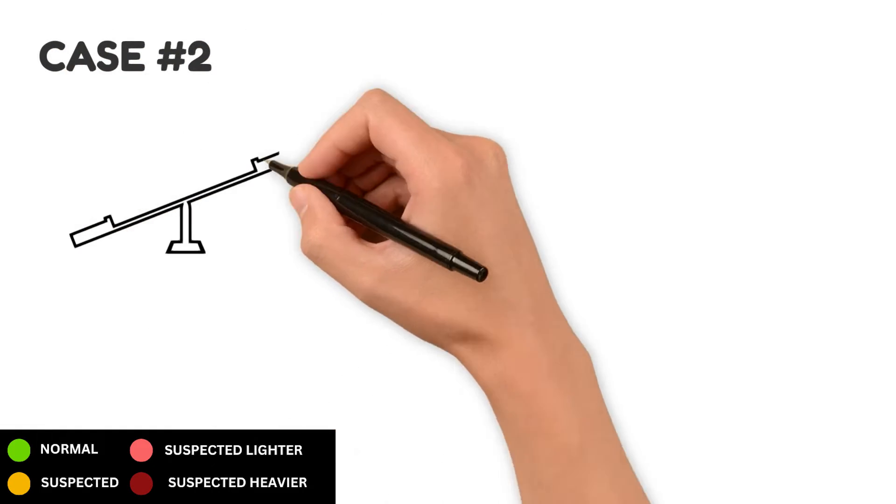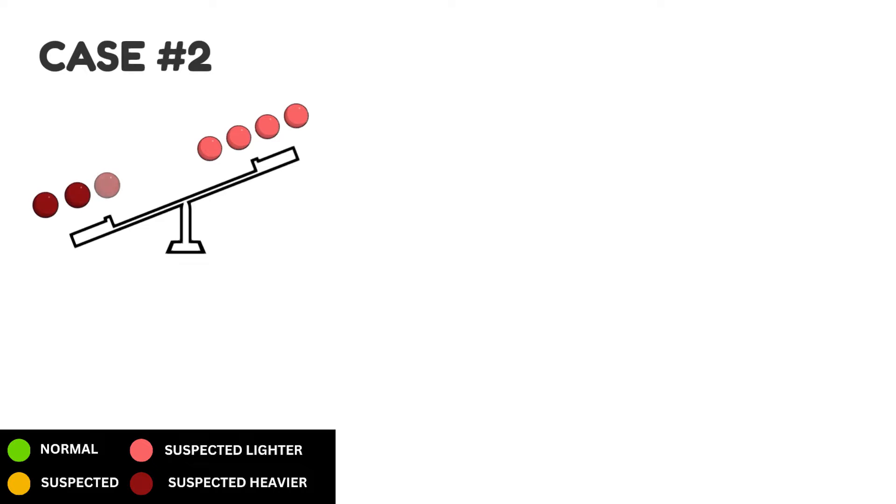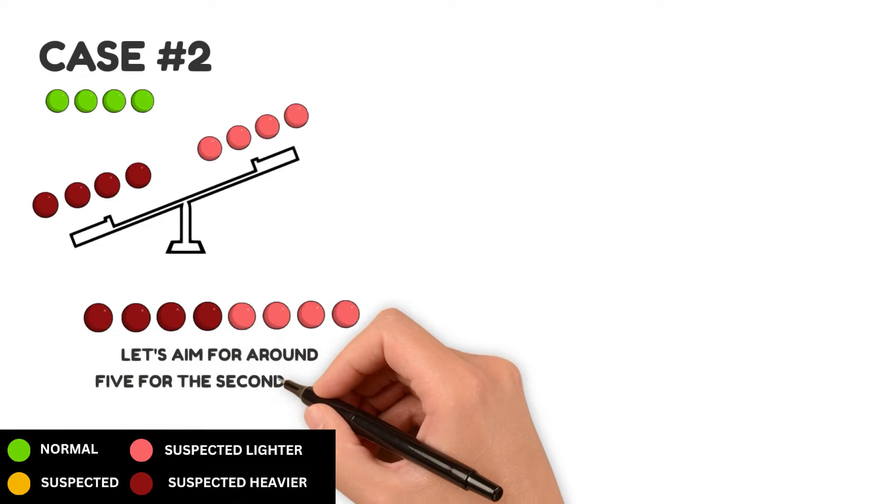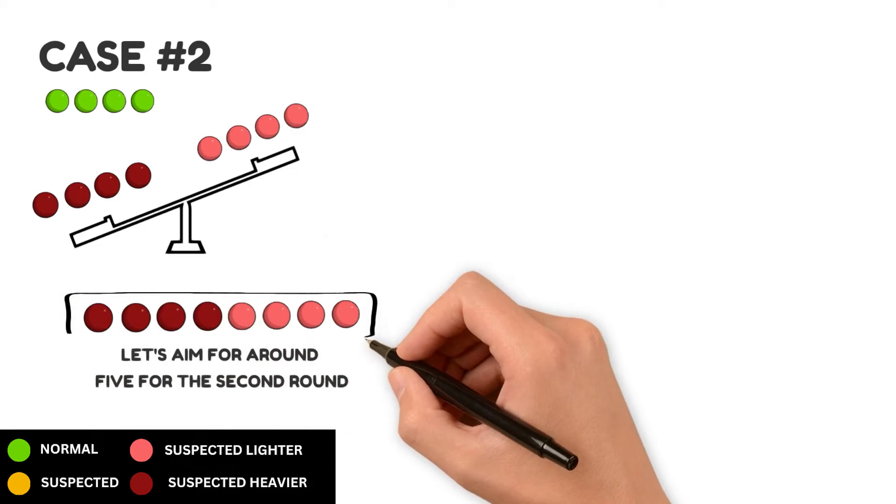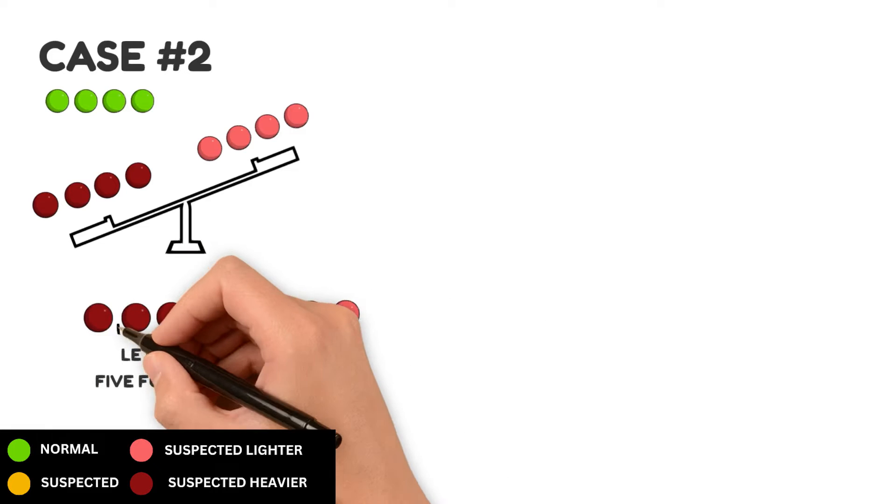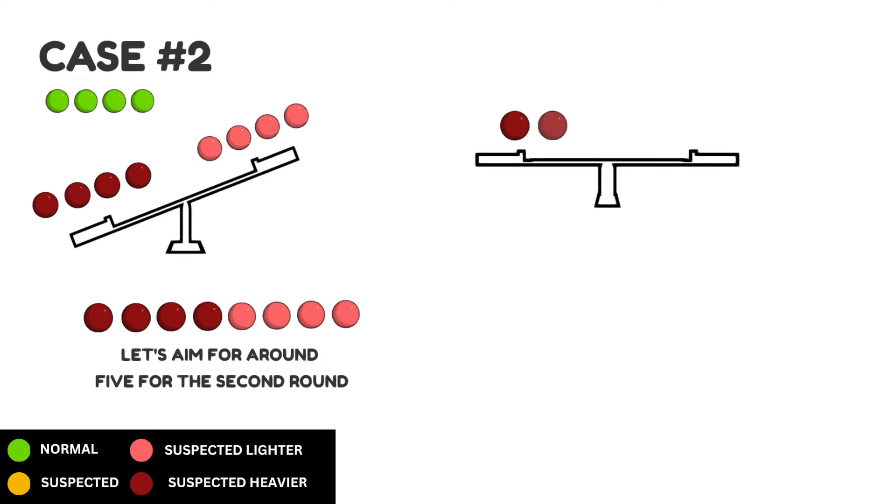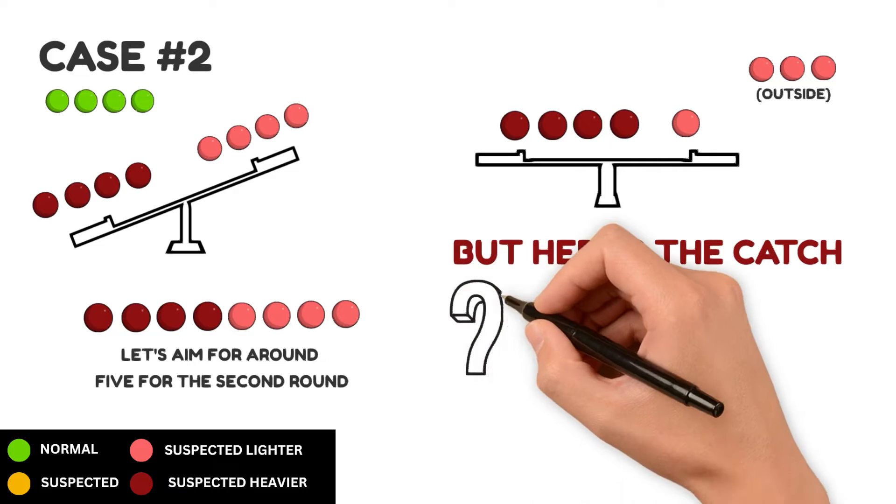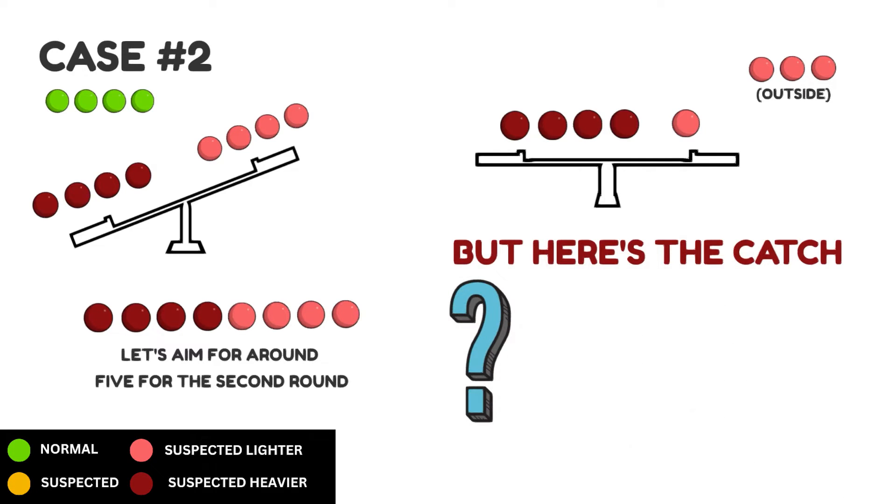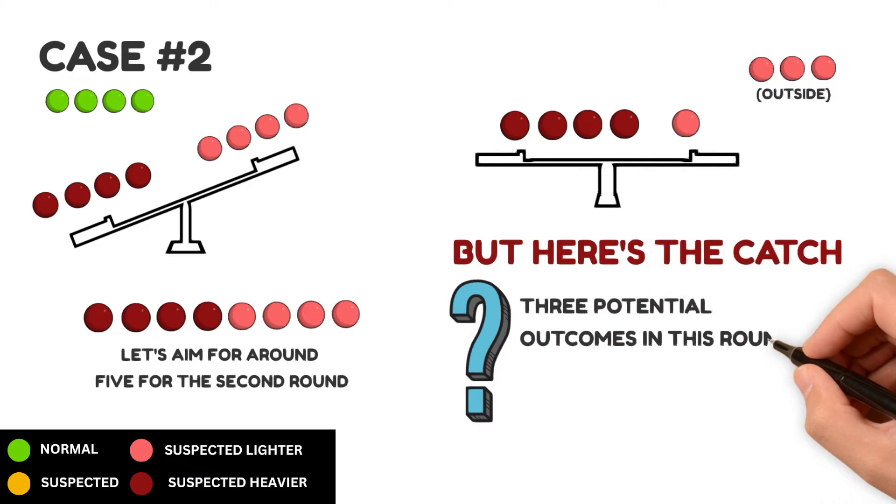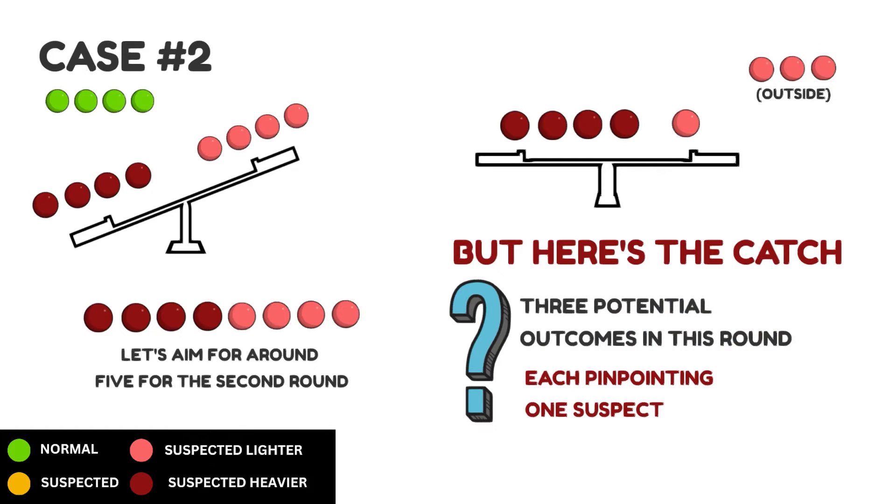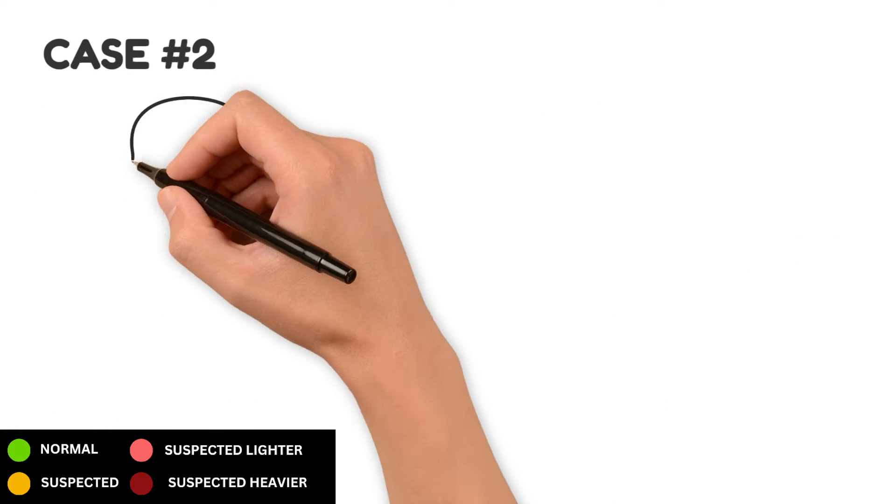Moving on to case 2. This is where the two groups don't balance during the first swing and we're dealing with a total of 8 suspects. Let's aim for around 5 for the second round. Now, which 5 suspects should we go for? We can choose any 5 since we'll always have at least one of each type. I'll go with 4 heavier and 1 lighter. But here's the catch. How do we position them for the final round? We can have 3 potential outcomes in this round, each pinpointing 1 suspect. This setup allows us to unravel the problem effectively.